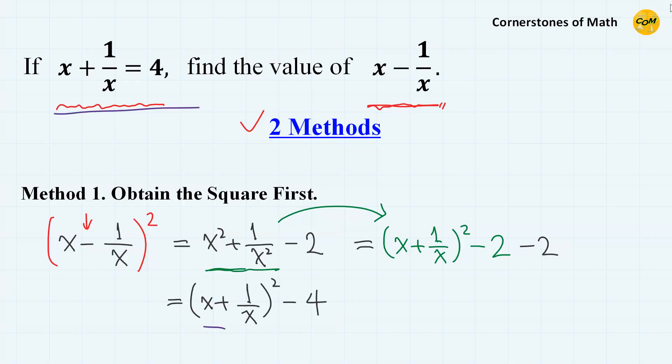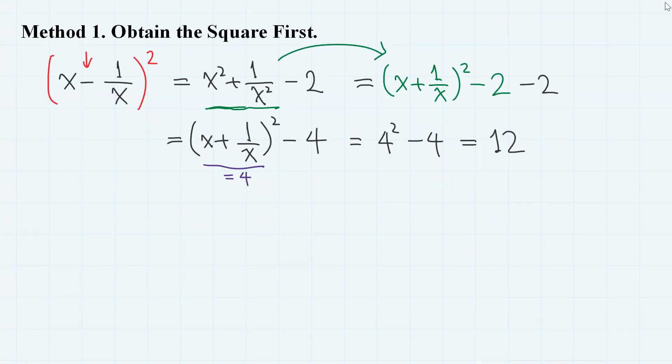And using the given condition that this value is 4, we have 4 squared minus 4, which is 12. And if we take square roots, we obtain x minus 1 over x equals plus minus 2 square root of 3.